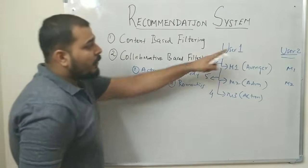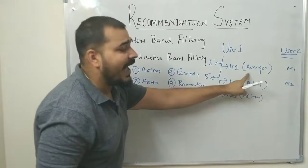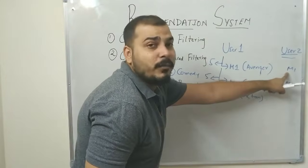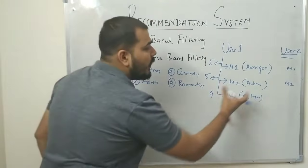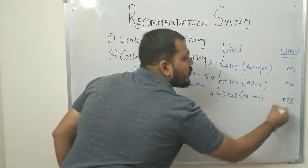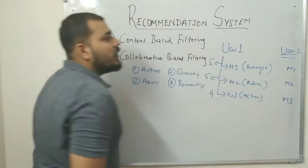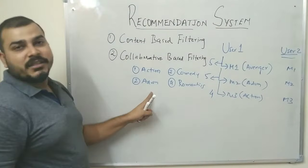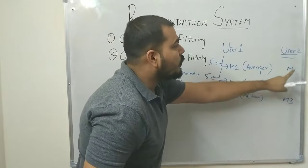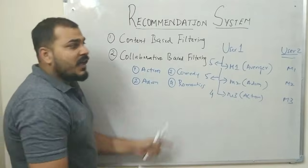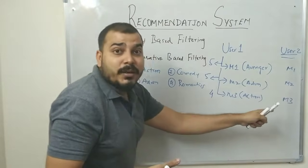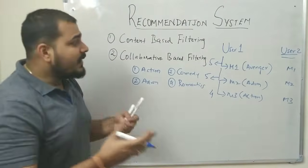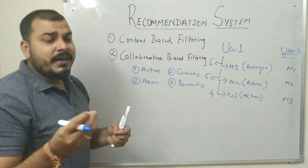From the ratings and categories, we can see that User 1 is very interested in action and adventure movies. Since User 2 has also watched M1 and M2 — which are action and adventure — User 2 will also get a recommendation for M3, because M3 is also an action movie. That is how content-based filtering works.